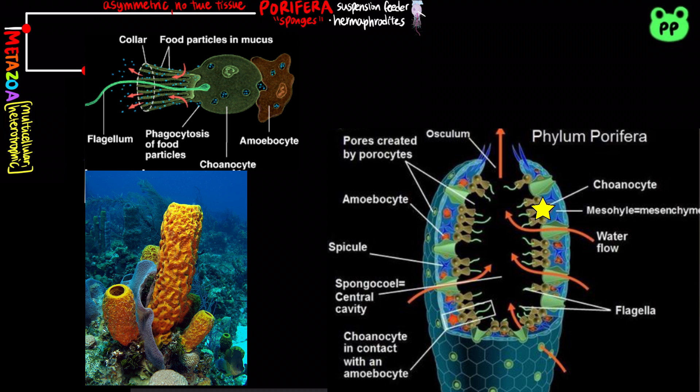Sponges contain flagellated collar cells known as choanocytes, which greatly resemble protists closely related to animals known as choanoflagellates. Choanocytes generate a water current through the sponge and ingest suspended food through phagocytosis.